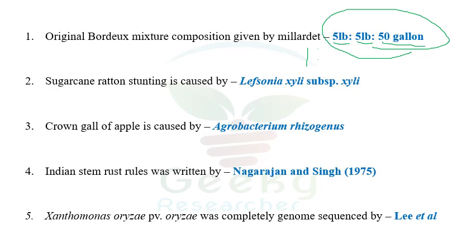The second question: sugarcane ratoon stunting is caused by Leifsonia xyli subspecies xyli. The previous name was Clavibacter xyli subspecies xyli. This is one of the important questions — I have written the national eligibility test three times and have seen this question two times. So I think it is one of the important questions.